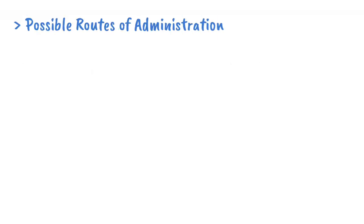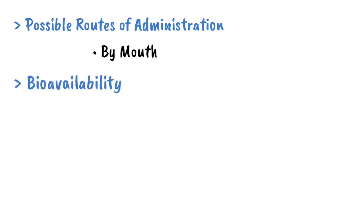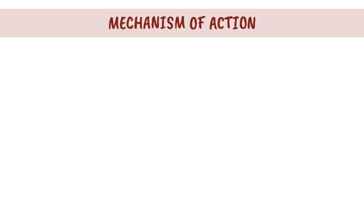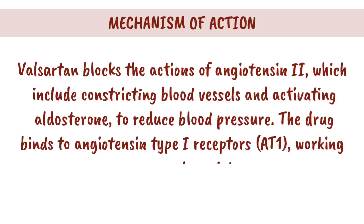Possible Routes of Administration: By mouth. Bioavailability: 25%. Elimination Half-Life: 6 hours. Mechanism of Action: Valsartan blocks the actions of Angiotensin II, which include constricting blood vessels and activating aldosterone, to reduce blood pressure.